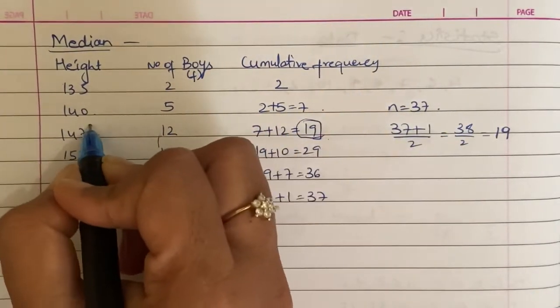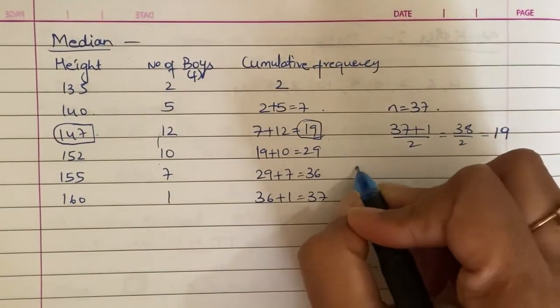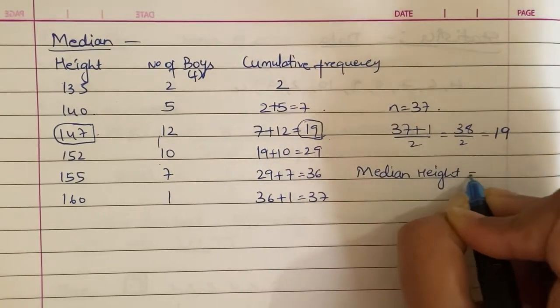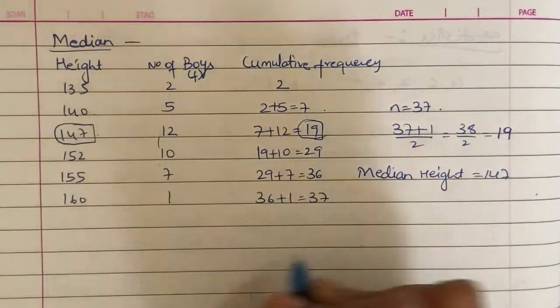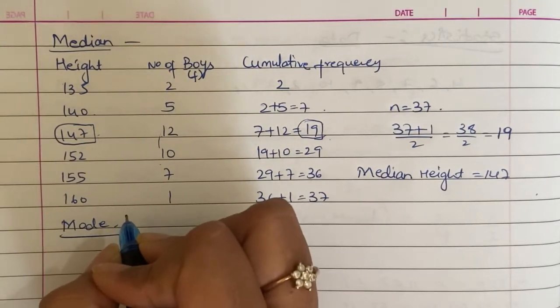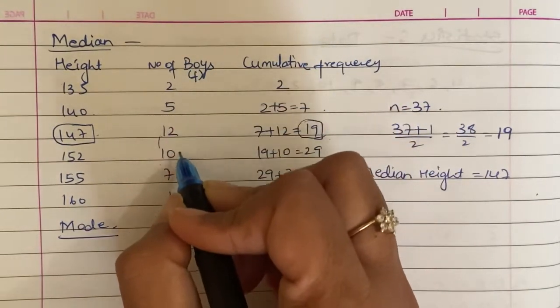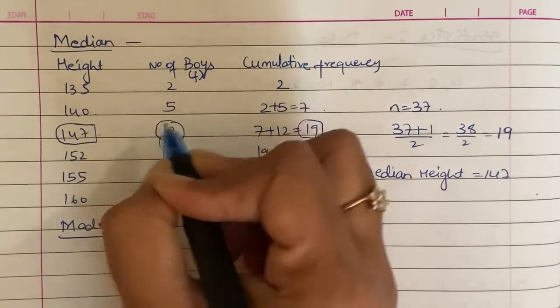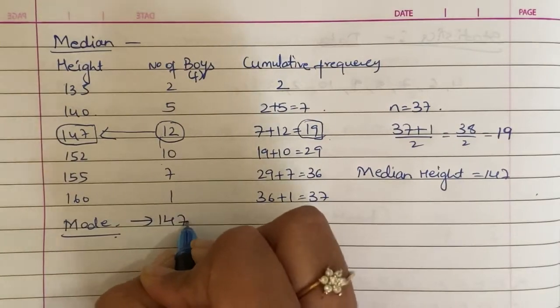The median will be 147. So median height is 147. Same data I will find a mode. Mode is most repetitive, most highest frequency. So greatest number is 12. Opposite, this is ungrouped. So the data 147 is also mode.